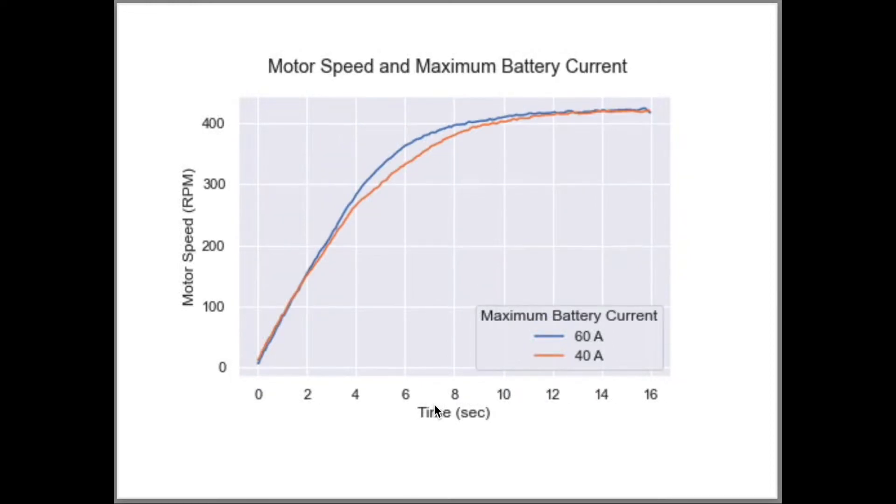Let's go back to the wheel speed for different maximum battery currents where the initial accelerations are the same. We can see that the 60 amp run reaches speeds between 300 and 400 RPM about one second before the 40 amp run.